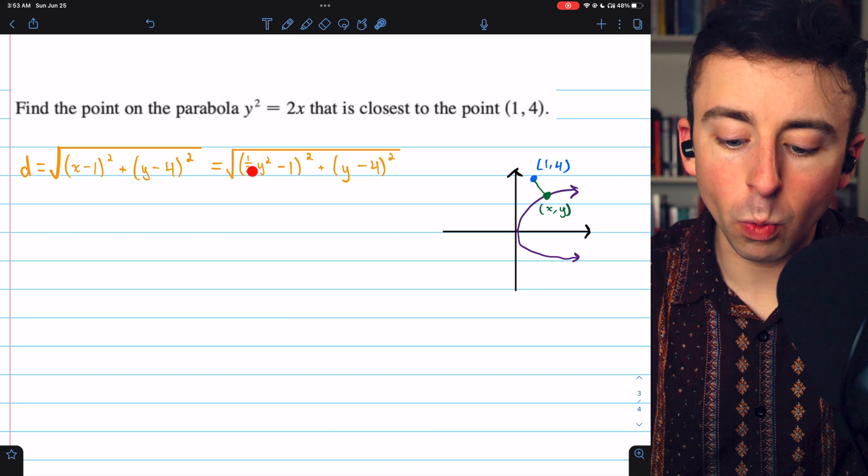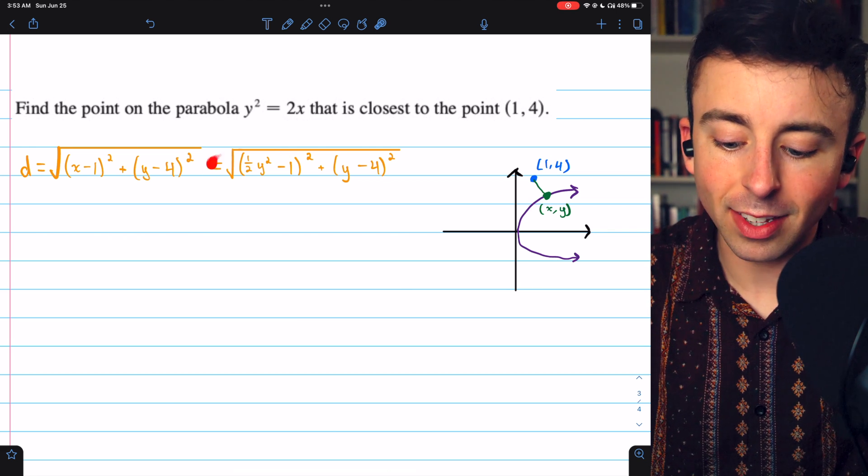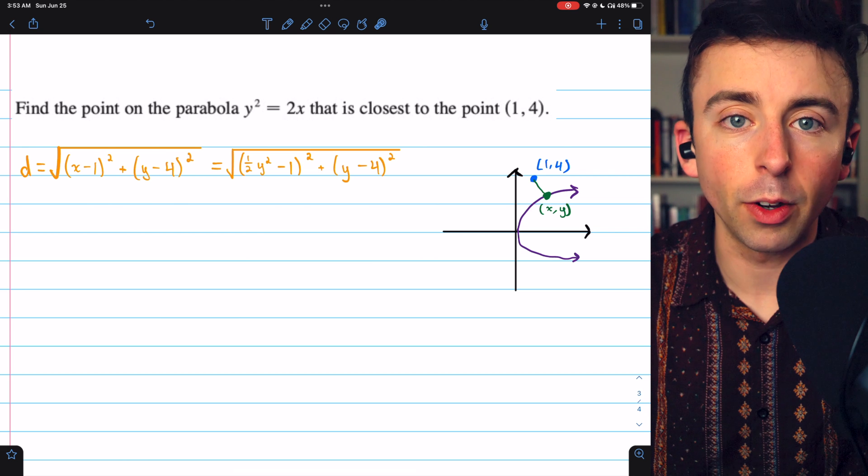So where we had x, we'll just put one half y squared, giving us this equation for distance in terms of a single variable.